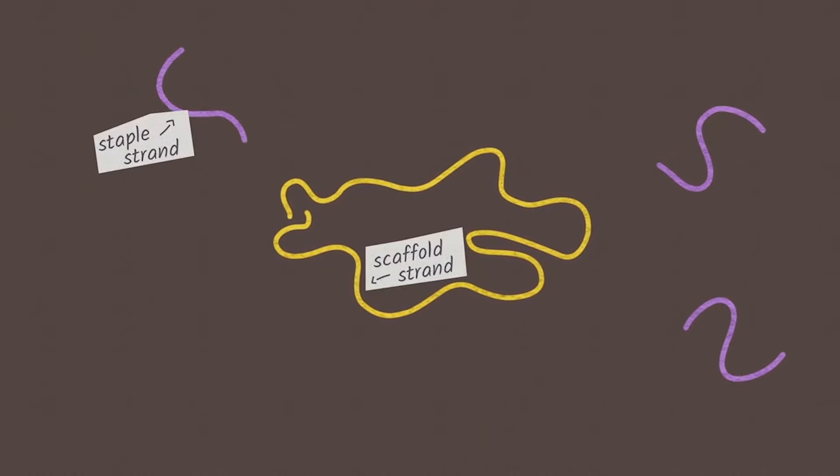In order to make these DNA nanostructures, Xing uses long pieces of DNA called scaffold strands that create the structure. Then he uses shorter strands called staple strands to secure the shape he has created, just like how you staple pieces of paper together.